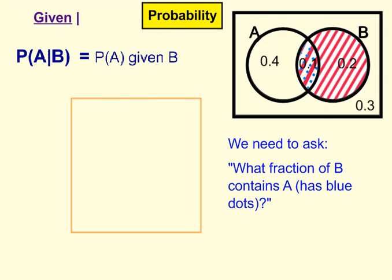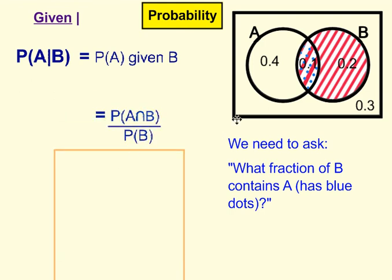Back to our original problem. The probability of A given B — we know that the only chance of A happening is in this intersection area. We need to ask: what fraction of B contains A? This area here is the intersection of A and B, or the probability of A intersection B, and we're dividing that by the probability of B — this whole region here. Just think of it as the west coast of the United States divided by the whole of the United States.